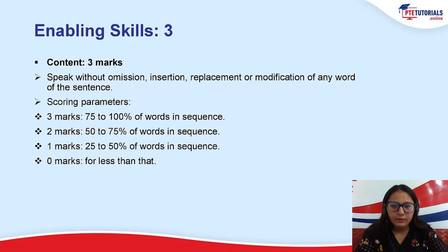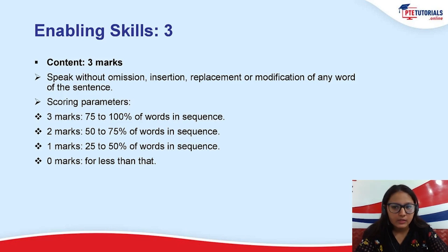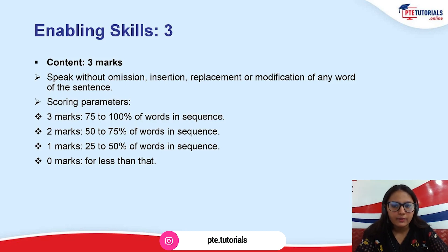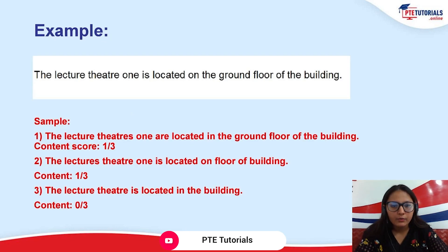Two marks will be granted if we try to speak 50 to 75 percent of the words in sequence. This is based on details already mentioned in the score guide. One mark will be granted when we try to speak 25 to 50 percent of the words in sequence. Zero marks for less than that. So for those planning for 79 or 84 plus, we need approximately 90 percent of questions with three marks towards content. The remaining questions are fine with two marks in content.